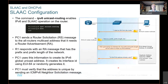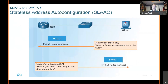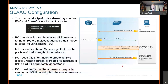Then it sends using FF02::1, the all-nodes multicast. Because the host doesn't have an address yet, it can't send a unicast address back, so it has to send back to all nodes. Remember, the command IPv6 unicast-routing enables IPv6 and SLAAC operation on a router.